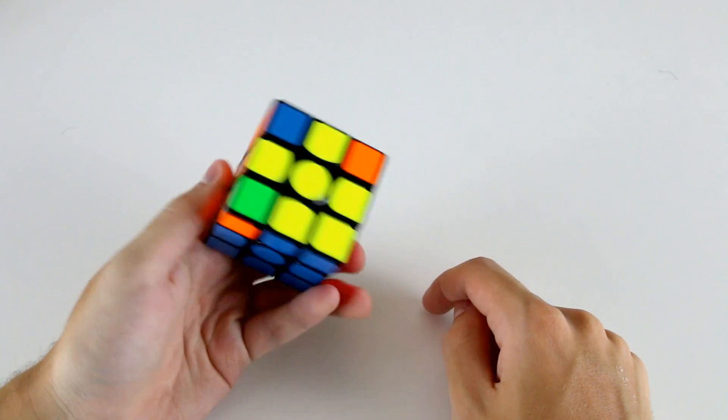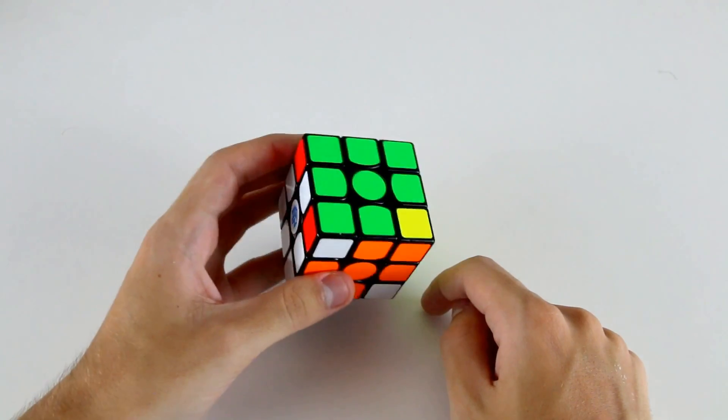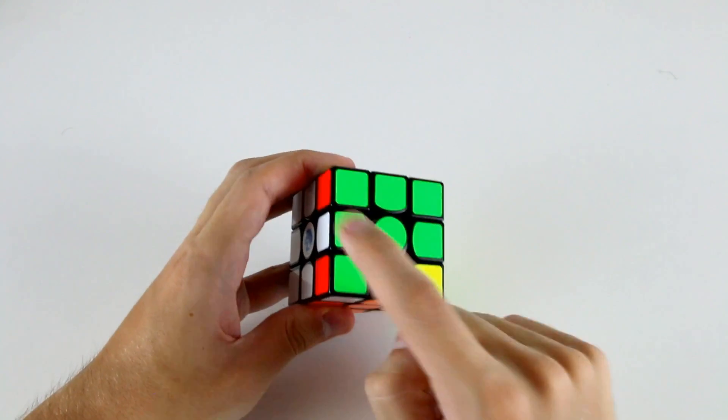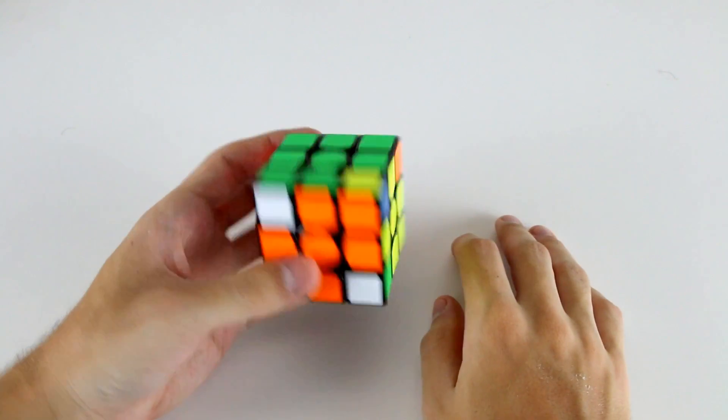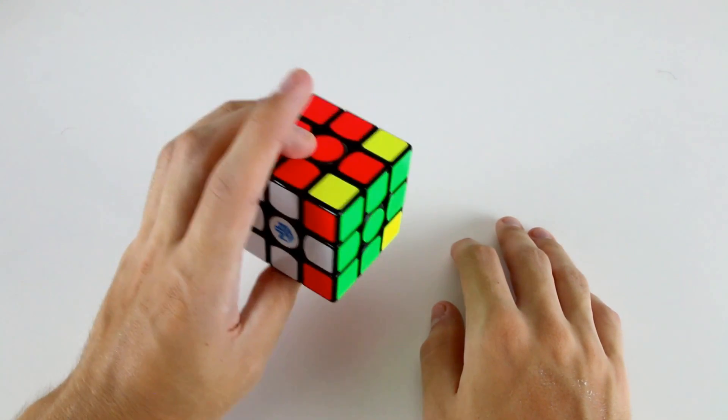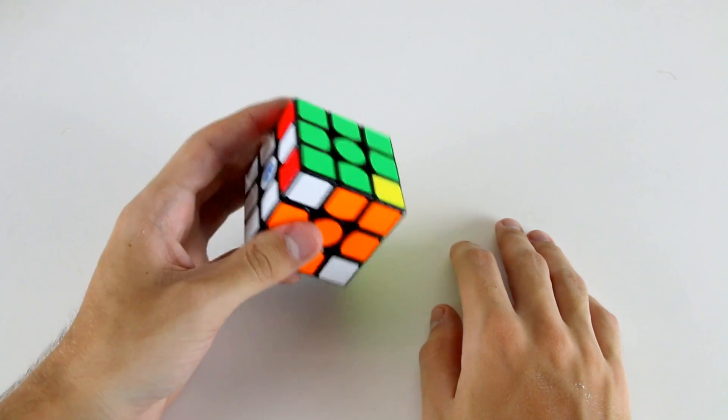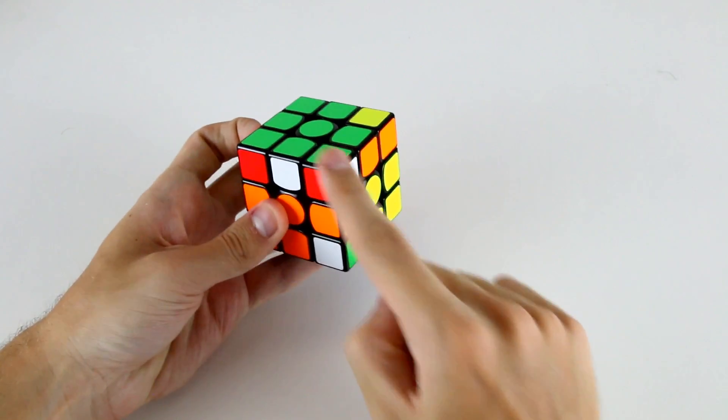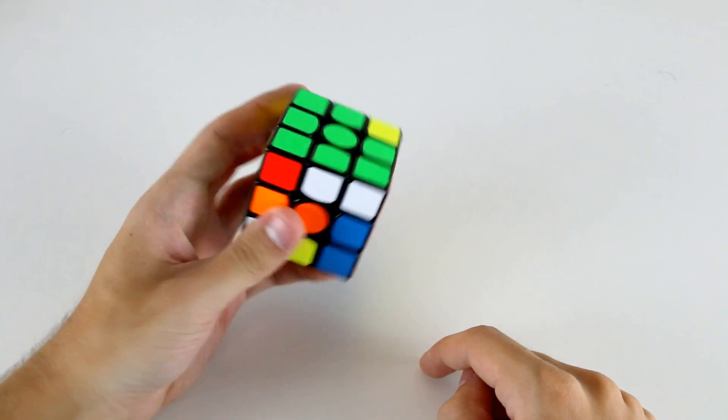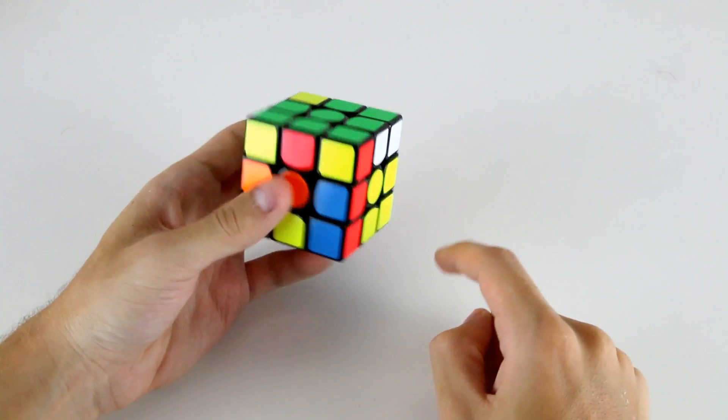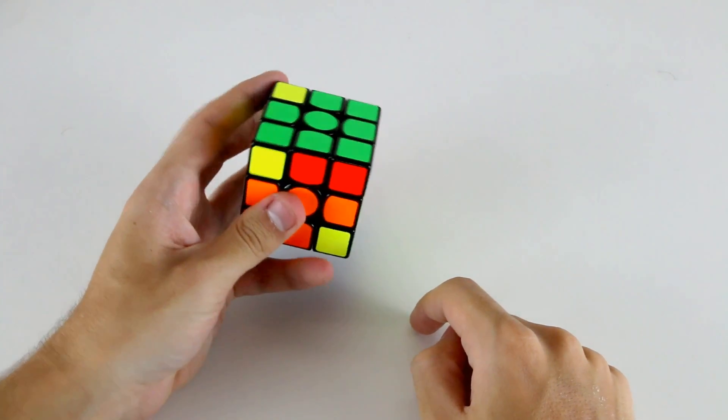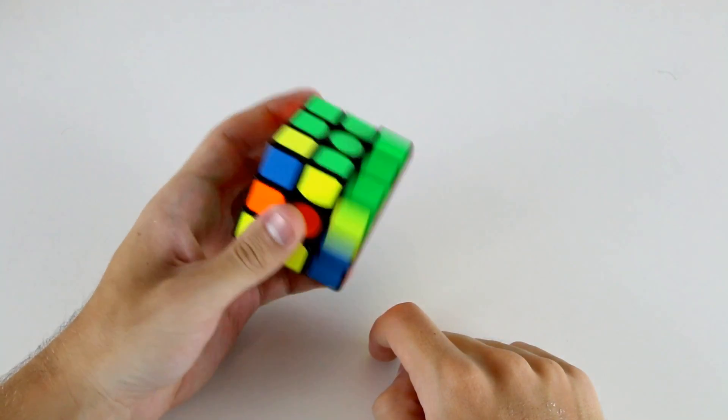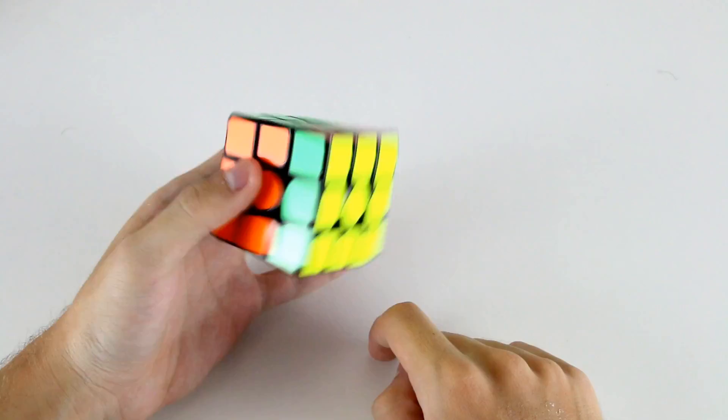And another thing I noticed, this is kind of really fancy, but I also noticed that all of the last layer edges are solved as well. So all of the edges are solved on this cube. So we can just do like a megaminx style last five corners algorithm. So just inserting this one into this position, R prime D prime R, moving it across, R prime D prime R, U prime R prime D prime R, U prime R prime D prime R, like that.